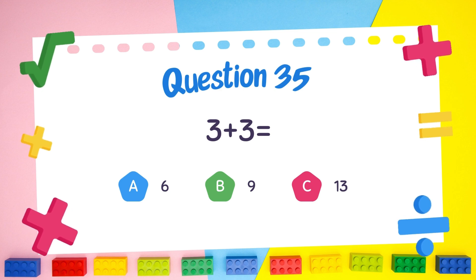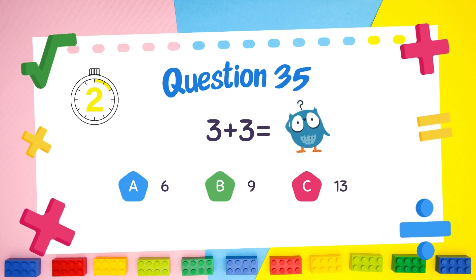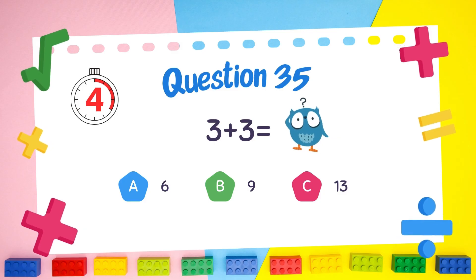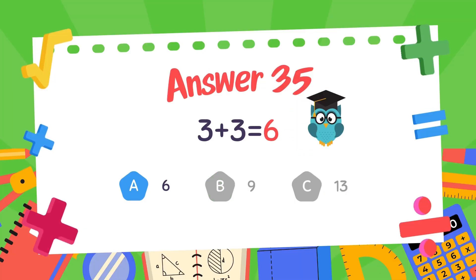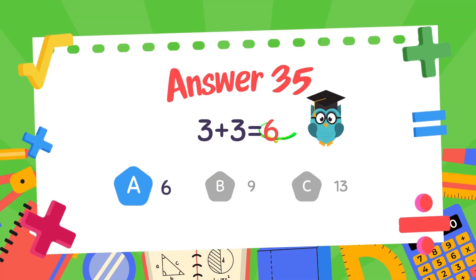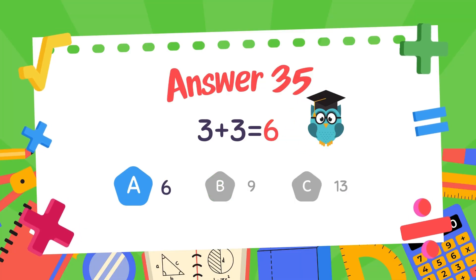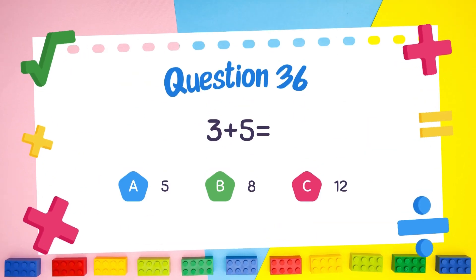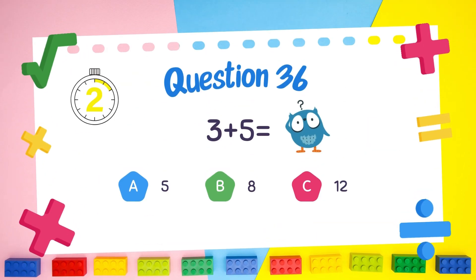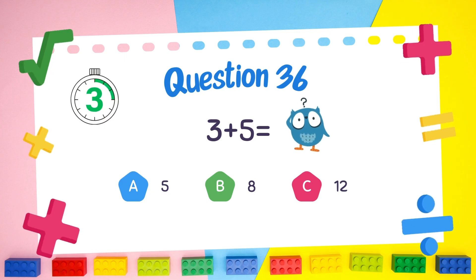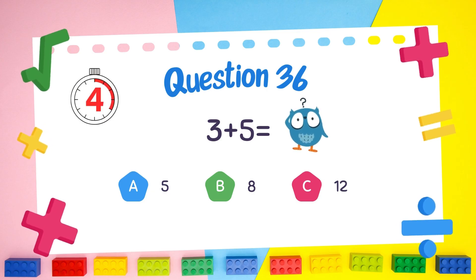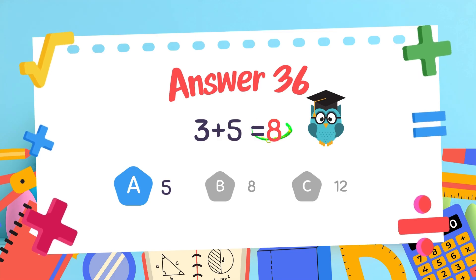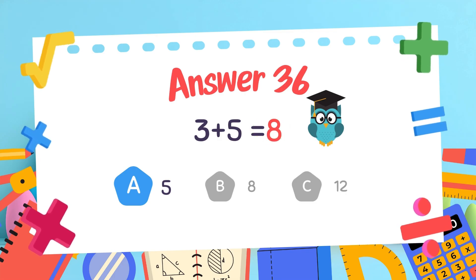What is 3 plus 3? The answer is 6. What is 3 plus 5? The answer is 8.